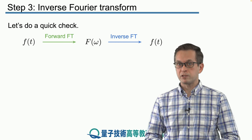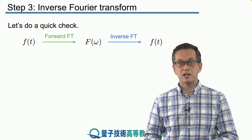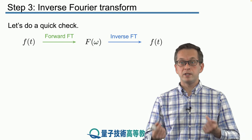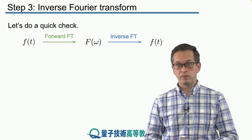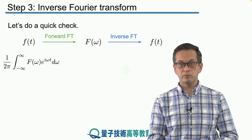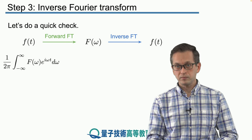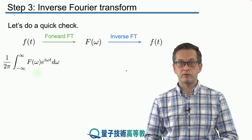If we start with some time signal f(t) and take the Fourier transform, we move into the frequency domain where the function is given by its spectrum denoted by capital F(ω). If we then take the inverse Fourier transform of that function we should end up with the initial signal in the time domain. So here we will check that it really does work. We start with the inverse Fourier transform: 1 over 2π, the integral over the whole frequency range of F(ω) weighted by these complex exponentials. Now we substitute the forward Fourier transform for capital F(ω).